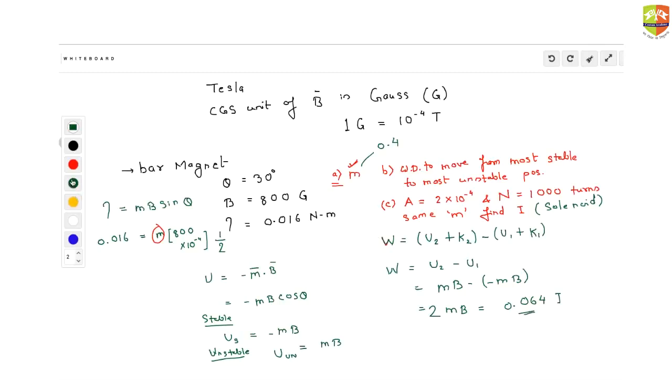Now can you find out how much current should be there in a solenoid having 1000 turns that has the same magnetic dipole moment? Magnetic dipole moment of a solenoid is nIA. This should equal m. So current is m, which we have already got as 0.4, divided by number of turns, which is 1000, times area, which is 2 into 10 raised to minus 4. This you will get as 2 ampere. I hope you are able to solve these kinds of questions.